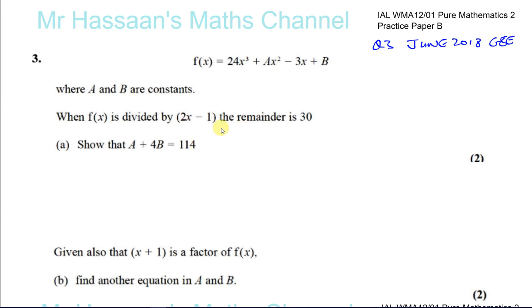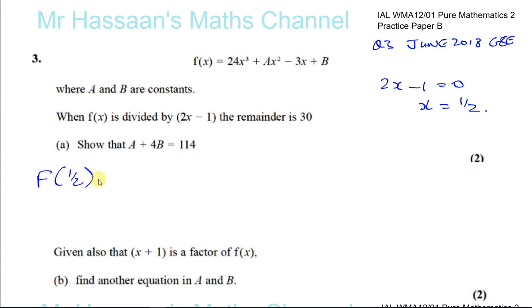The remainder theorem tells us that when dividing by a bracket, we substitute the value that makes that bracket zero into the expression, and the result is the remainder. What makes 2x − 1 = 0? That's when x = 1/2. So substituting x = 1/2 into f(x) should give us 30 — that's our remainder.